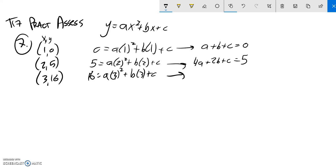3 squared is 9, so that's 9a plus 3b, also plus c, and that is equal to 16.